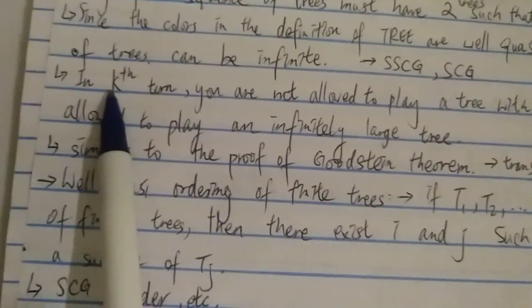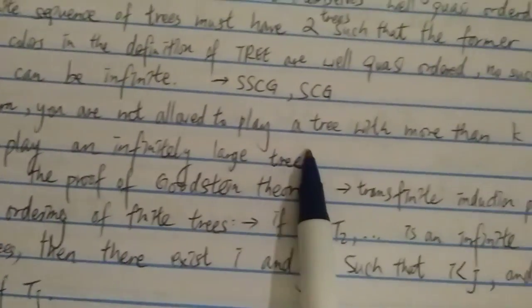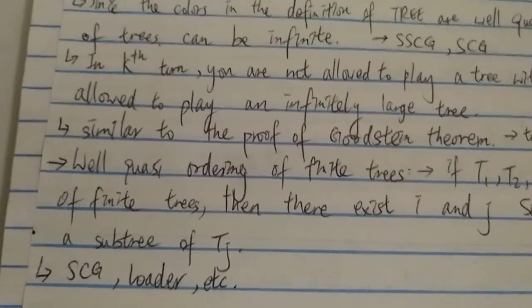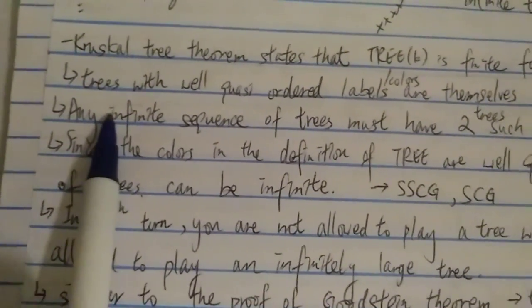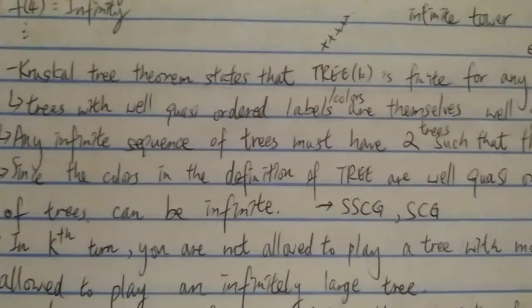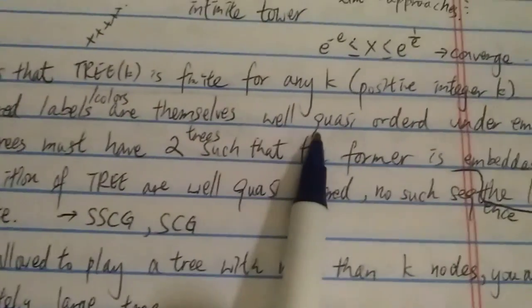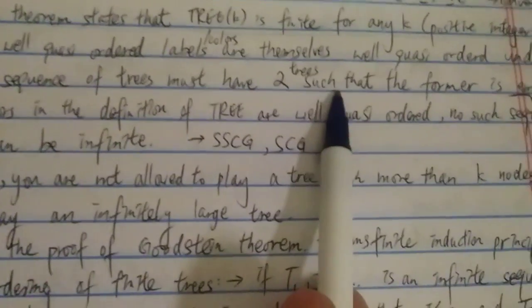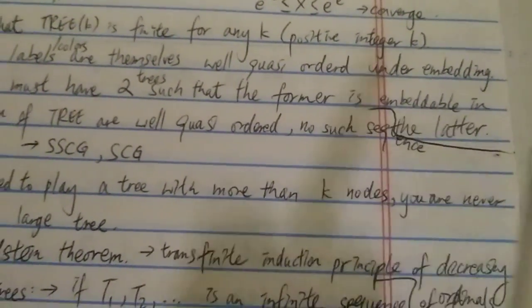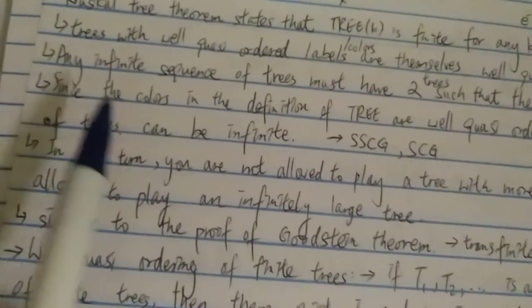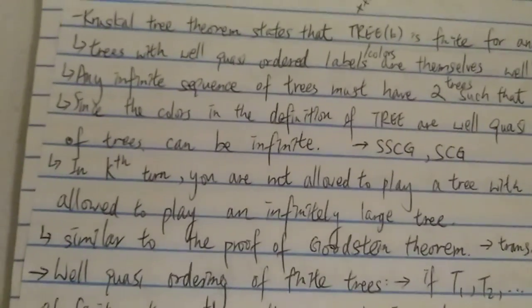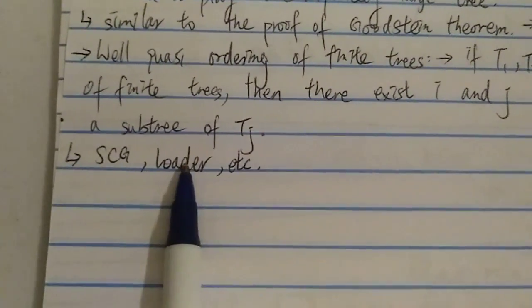Also remember that in the TREE game, you are not allowed to play a tree with more than k nodes, so you are never allowed to play an infinitely large tree — a tree can never be infinite in size. Furthermore, trees with well-quasi-ordered colors or labels are themselves well-quasi-ordered under embedding, and any infinite sequence of trees must have two trees where the former is embeddable in the latter. Since the colors in the definition are well-quasi-ordered, no such sequence of trees can be infinite. The same applies for SSCG and SCG.